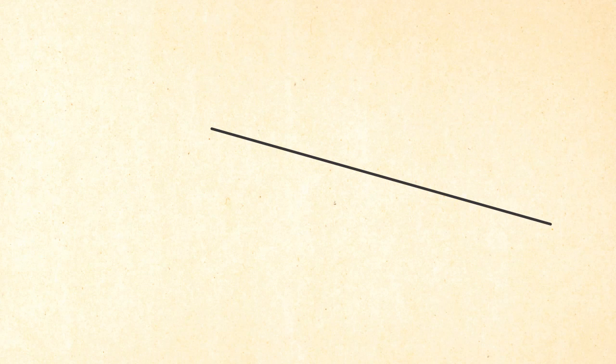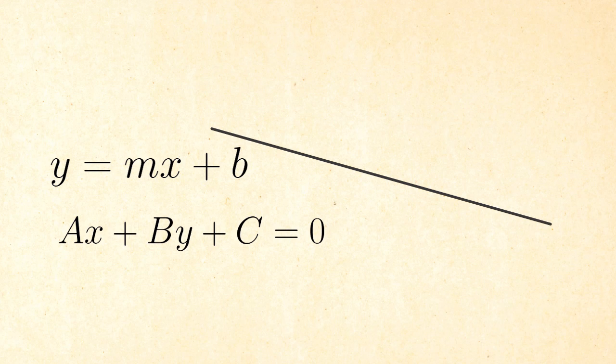The line equation of the straight lines have many representations. The most common of which is the slope intercept form, that is defined using the slope of the line and its intersection with the y-axis. Another useful representation of the straight line is called the general form, where three parameters A, B and C are used.